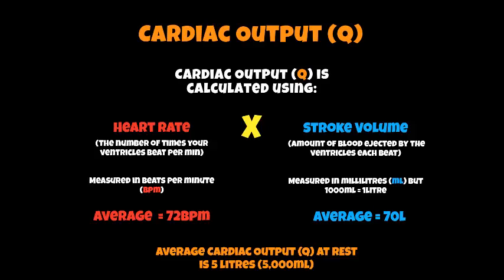So, overview of this page: cardiac output equals heart rate multiplied by stroke volume, and the average numbers are there at the bottom.